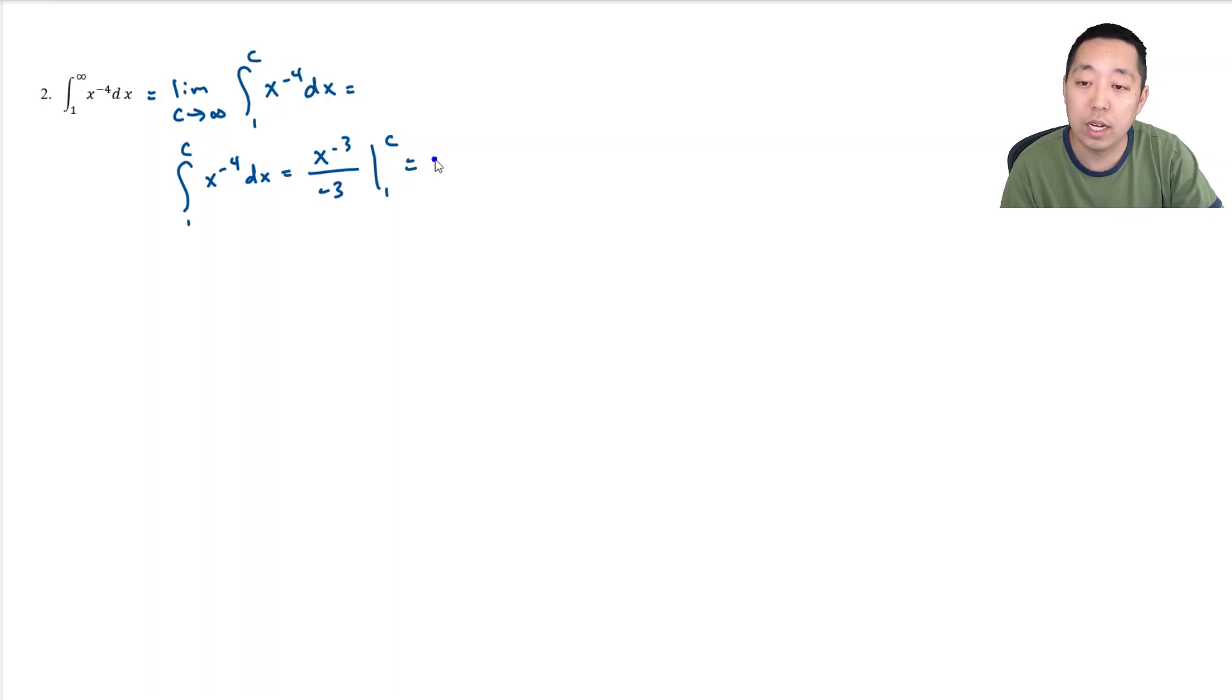I'll bring out the negative 1 third. It's going to be c to the negative 3 minus 1 to the negative 3. That becomes 1 over c cubed minus 1, because 1 to the negative 3 is still just 1. Now I'm going to evaluate the c as c goes to infinity for this expression.